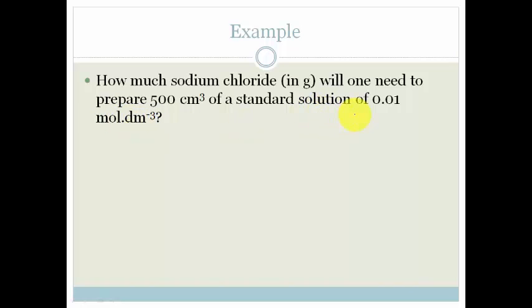First of all let's write down our formula. Concentration is number of moles over volume. It says how much sodium chloride, so sodium chloride is NaCl, and it says how much in grams. But we know that mass over molar mass equals number of moles. That's what we need to be thinking about.